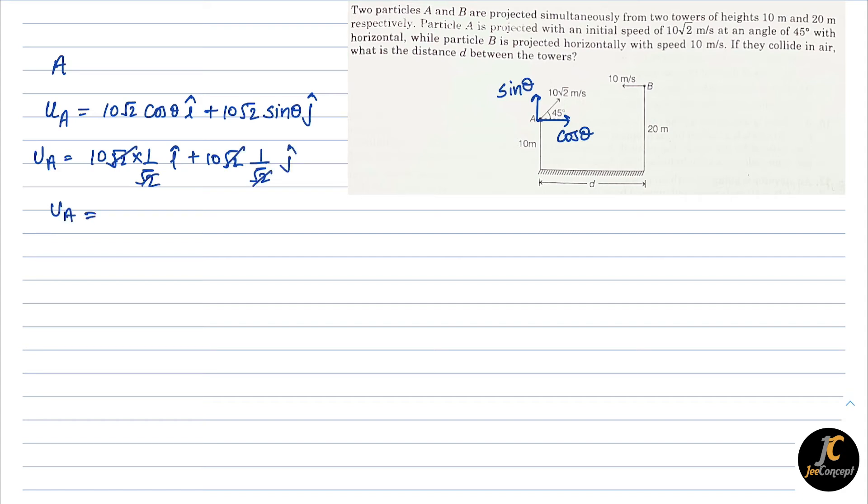ub is just a horizontal velocity, and if we took this velocity as positive direction, then the velocity of B will be in negative direction. Now we will write the relative velocity of A with respect to B, which will become ua - ub. If I put the value of ua which is 10i + 10j minus (-10i), this will become 20i + 10j.